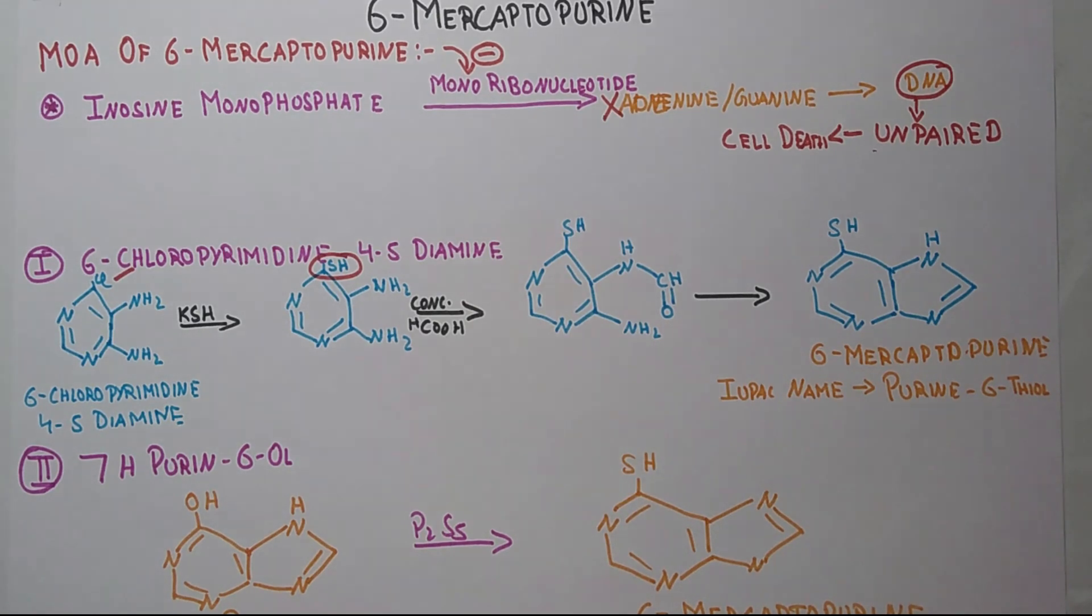Now let's talk about some of its properties. It is a yellow crystalline powder, practically insoluble in water, slightly soluble in alcohol, and dissolves in solutions of alkali hydroxides.